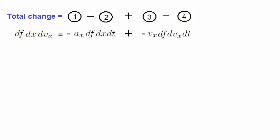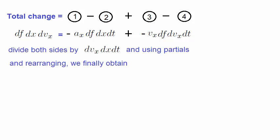Let's now divide both sides by dv, dx and dt. And note that we need to use partial derivatives because the distribution is dependent on three variables. After doing this and rearranging, we finally end up with the following.